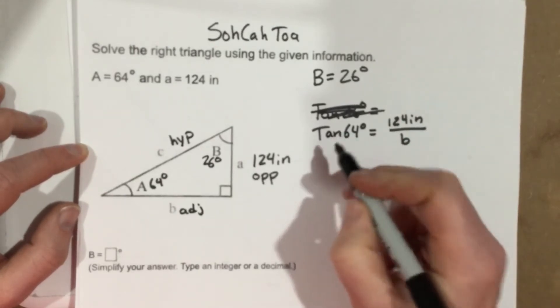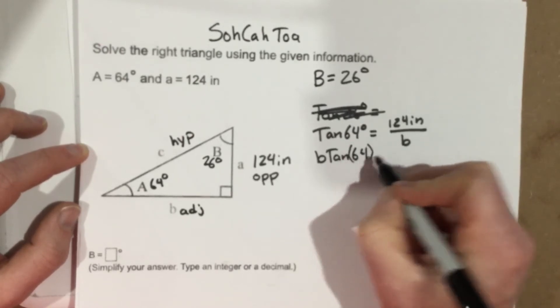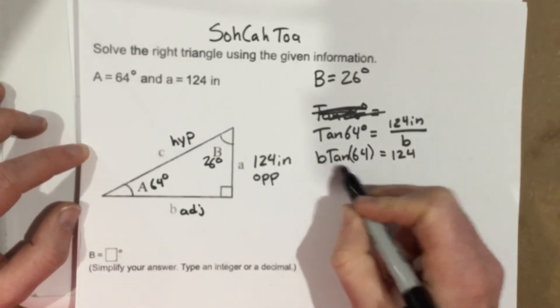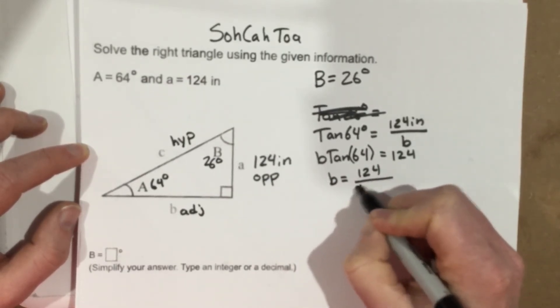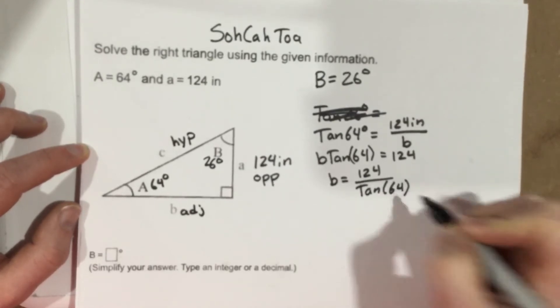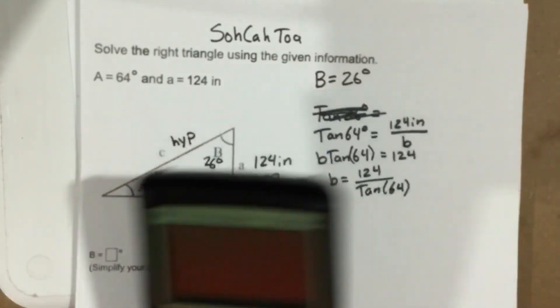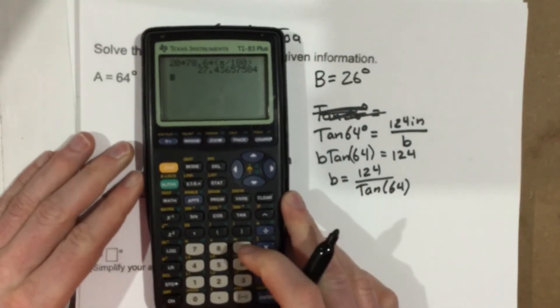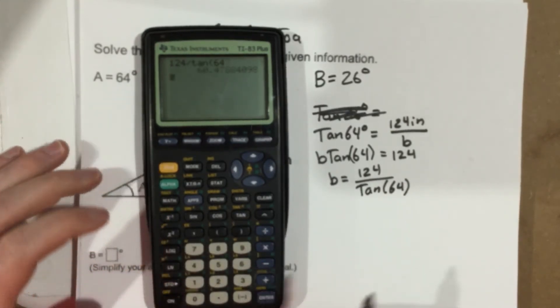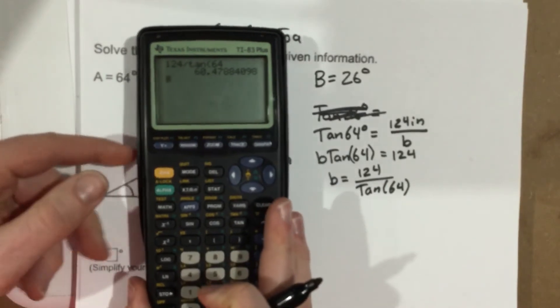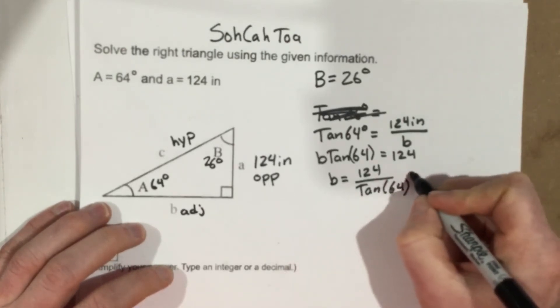Now I can solve that by multiplying by B, so I have B tan 64 equals 124, and divide by tan 64, and now I just need to throw this in the calculator. So I get 124 divided by tan 64, tells me that that is 60.48. So little b is 60.48.